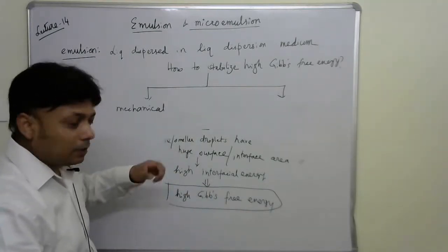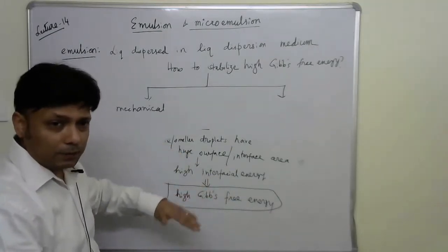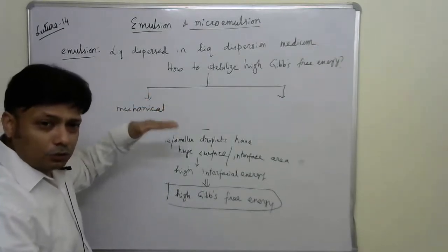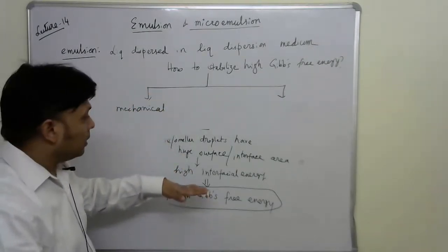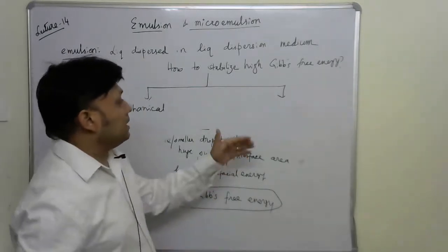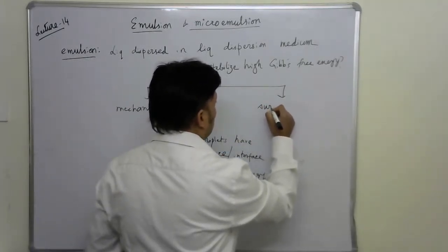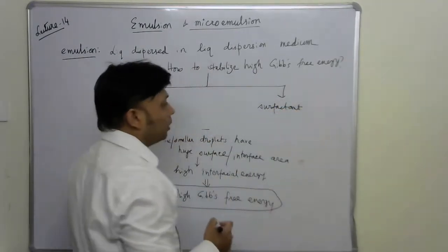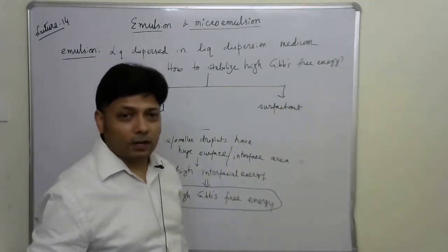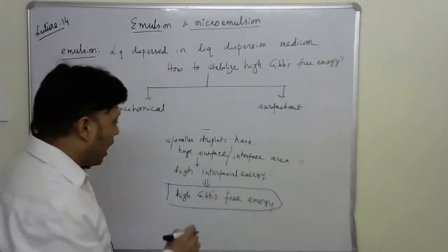As long as we keep on beating, we provide the high Gibbs free energy and we have the emulsion. The moment we stop beating, the system stabilizes from higher Gibbs energy to lower, returns to its ground state, and we have phase separation. The other possible way is to use specially designed molecules — by now we know these are called surfactants. We can add surfactant molecules to overcome this high Gibbs free energy.